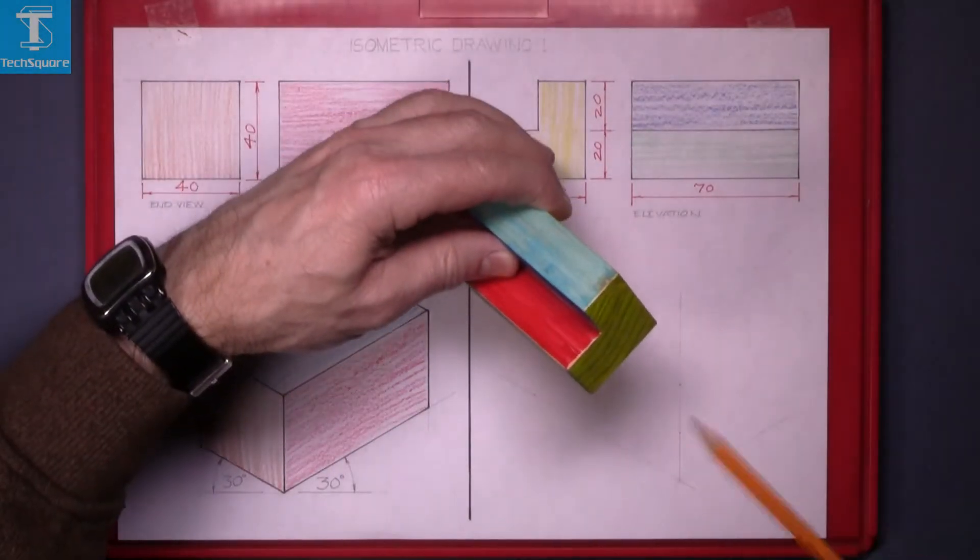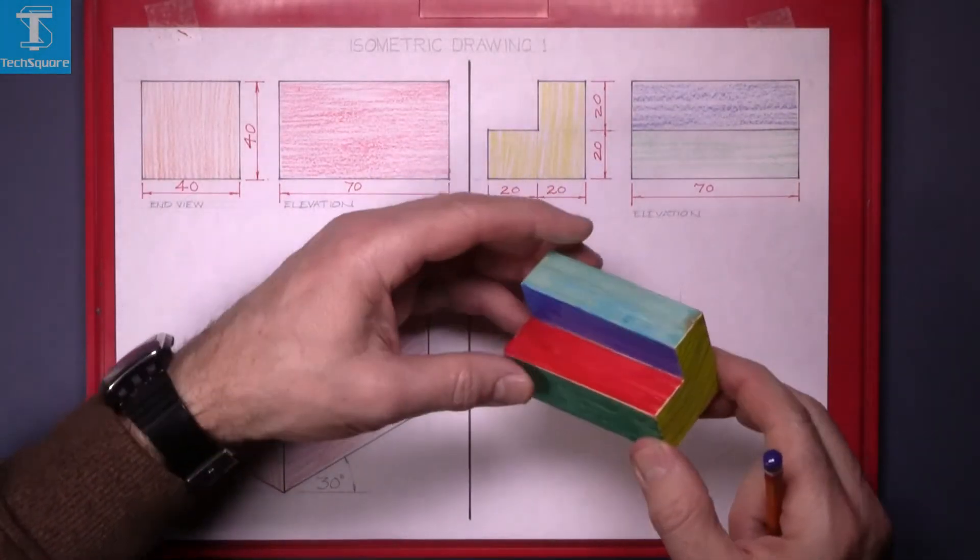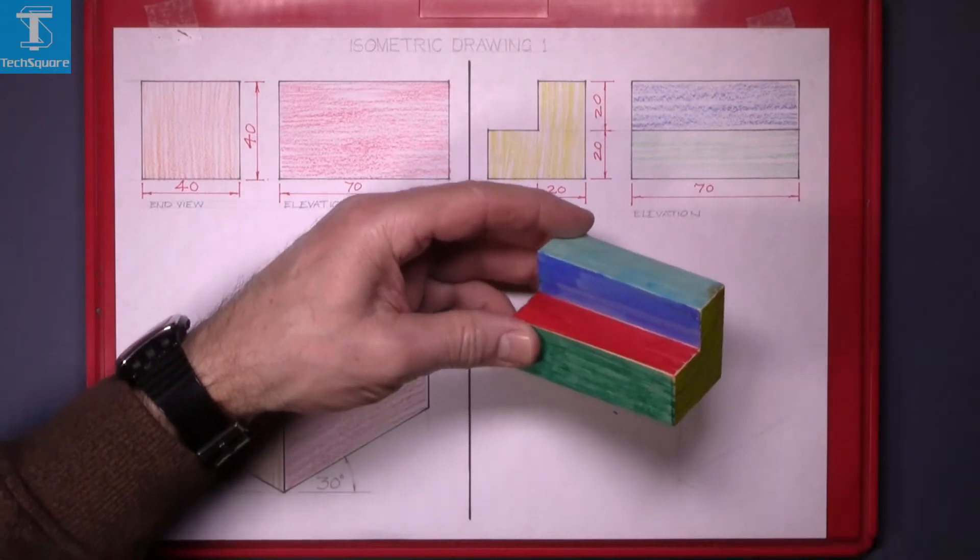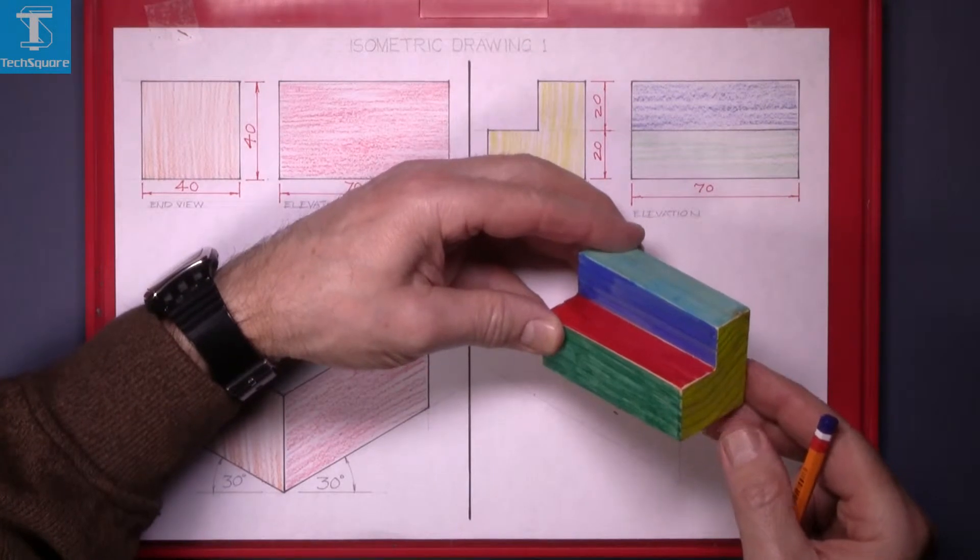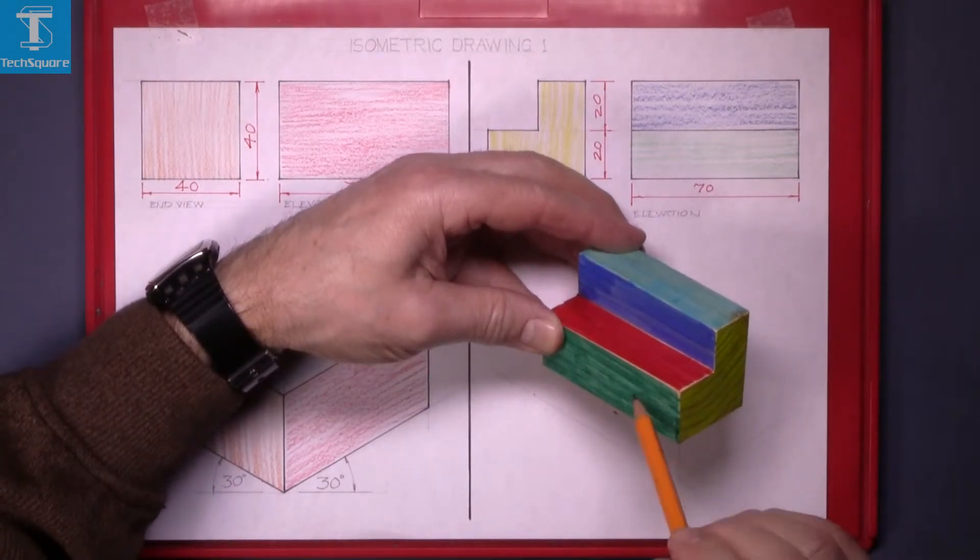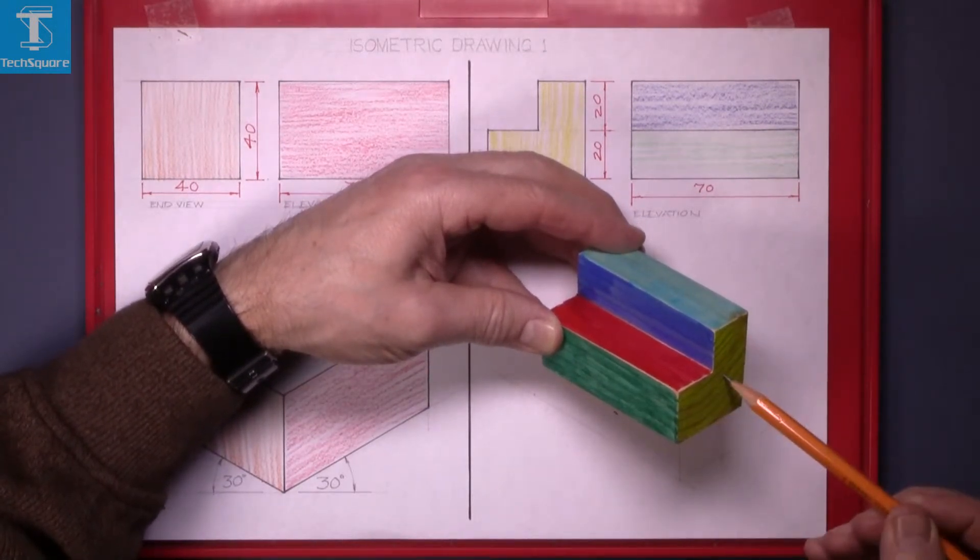Now given this block we are asked to draw the isometric view of this block. That is what we expect there. We are going to see these surfaces here now.